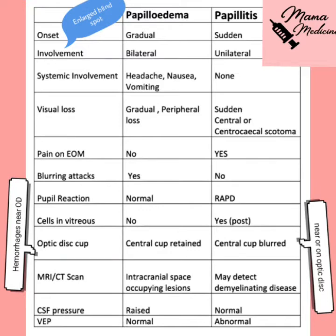Always remember that papilledema is always bilateral and it has a gradual, slow onset. Papillitis, on the other hand, is always sudden and always unilateral. There can be exceptions in both cases, but that is very rare.